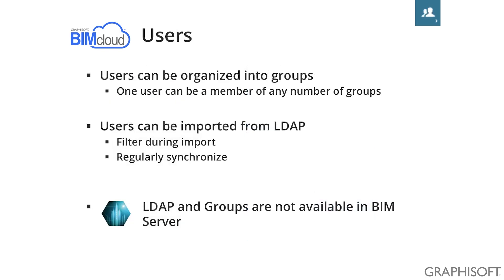Users can be organized into groups which help you represent your company's organization chart. If you have a lot of users, you can connect your BIMcloud to the company user directory and import all or only selected users from this directory. It is also able to regularly synchronize this user base — if someone changes a password in the user directory, this new password will automatically be imported into the BIMcloud manager. If a new employee joins your office, you can add him to the user directory and his information can be automatically imported to the BIMcloud.